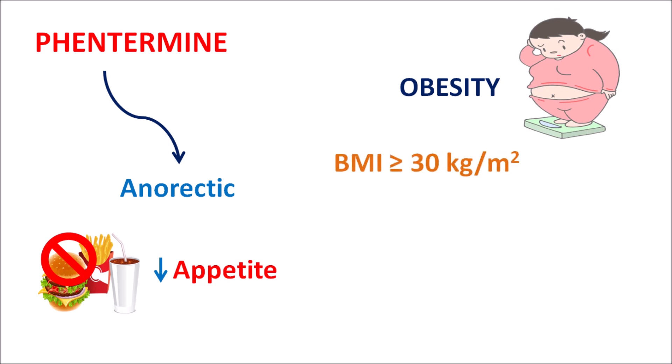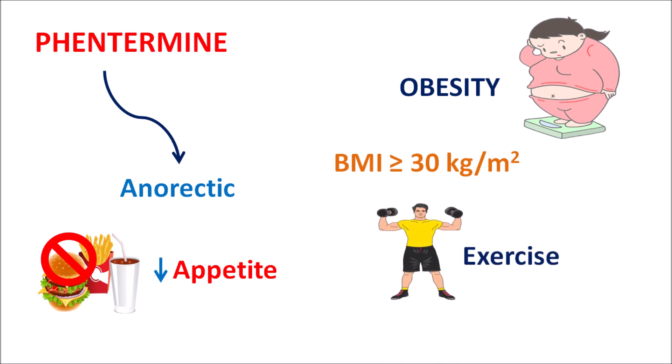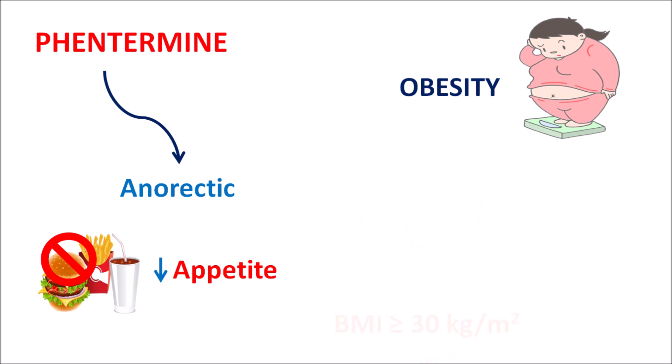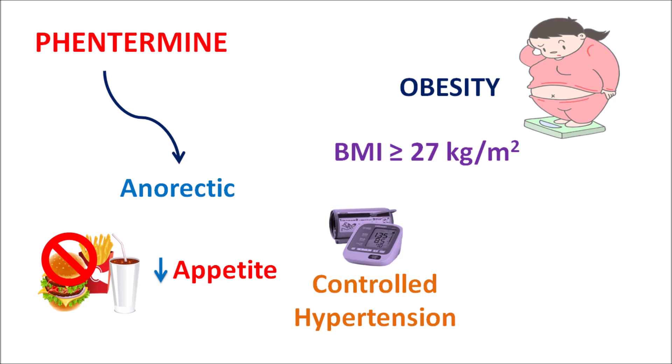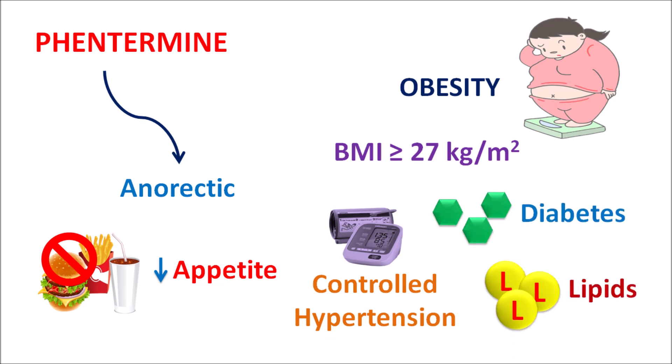Phentermine can be used for short-term treatment of exogenous obesity in patients with a BMI greater than or equal to 30 kg/m². It can be combined with topiramate, an anti-epileptic agent, along with proper diet control and exercise. It can also be given to patients with BMI ≥27 kg/m² who have risk factors that increase cardiovascular complications, such as controlled hypertension, diabetes, or elevated lipid levels.